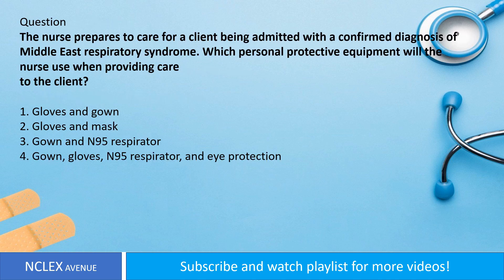Question. The nurse prepares to care for a client being admitted with a confirmed diagnosis of Middle East Respiratory Syndrome. Which personal protective equipment will the nurse use when providing care to the client? 1. Gloves and gown. 2. Gloves and mask. 3. Gown and N95 respirator. 4. Gown, gloves, N95 respirator, and eye protection.